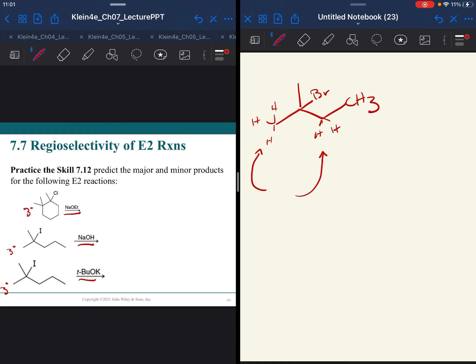E2 is the only option if you have a strong reagent, which all of these are, there's no water or alcohols. SN2 is not possible, so it has to be E2.